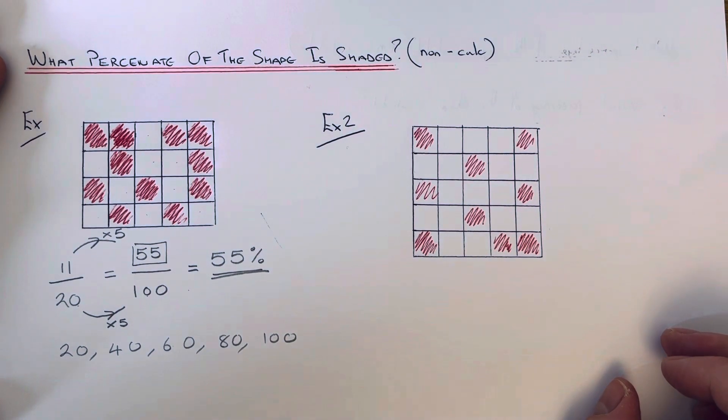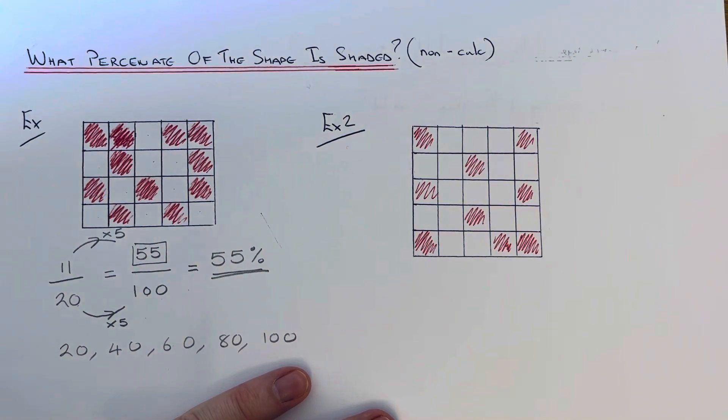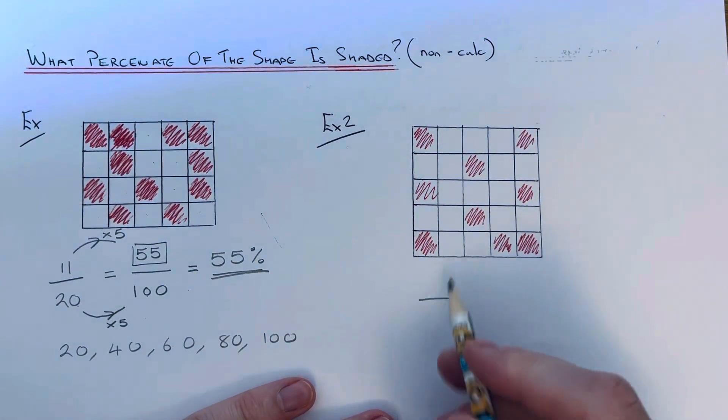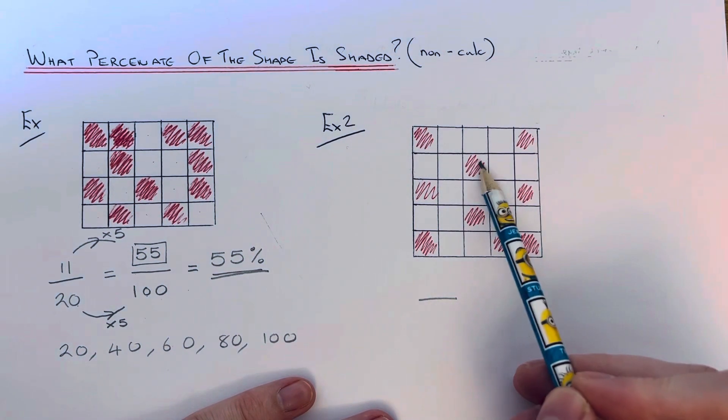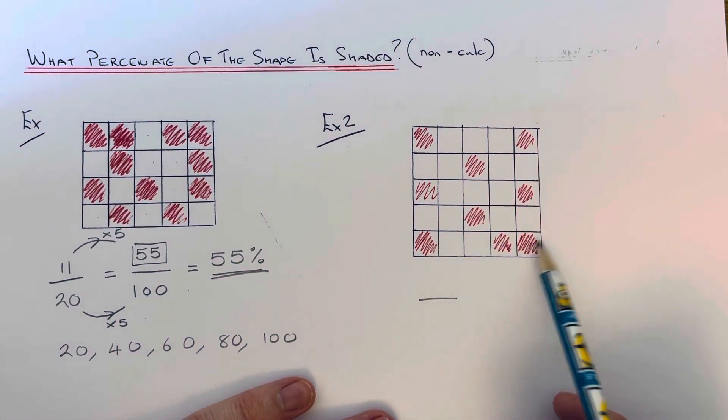So let's have a look at example 2 then. So again, we've got to write down the percentage of the shape which is shaded red. So on the top of the fraction, let's count how many squares are shaded. So we've got 1, 2, 3, 4, 5, 6, 7, 8, 9.